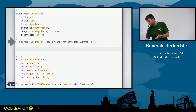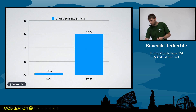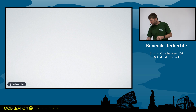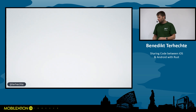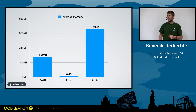In Swift the code is essentially the same — you declare a struct and convert a string into an array of media objects. Performance: Rust takes 0.18 seconds, Swift takes 3 seconds to parse a quite large JSON structure. For memory consumption across all benchmarks: Swift averages 138 MB, Rust averages 6 MB, and Kotlin averages 331 MB — a huge difference, especially for code shared across all platforms.